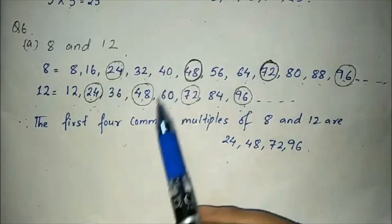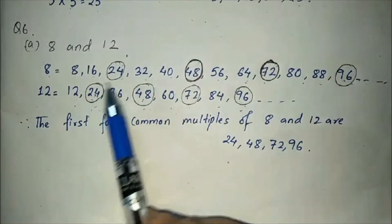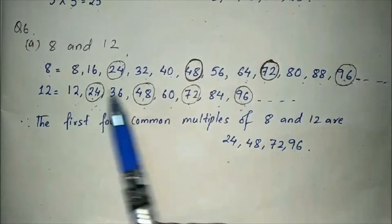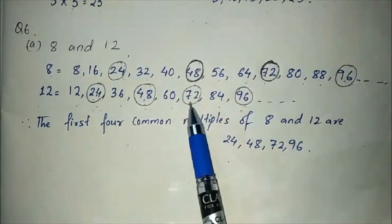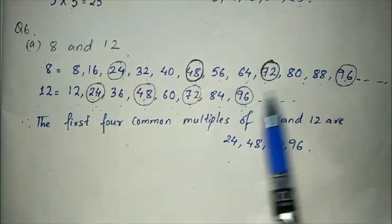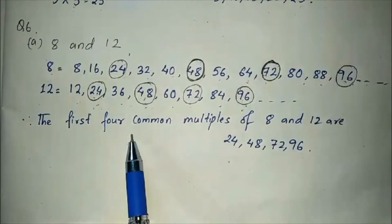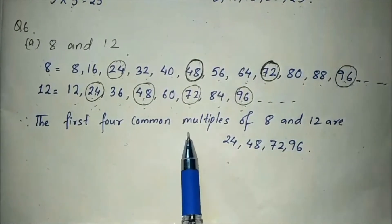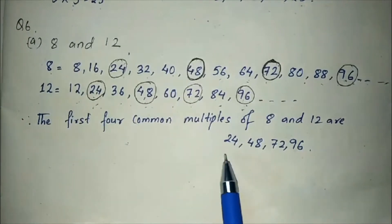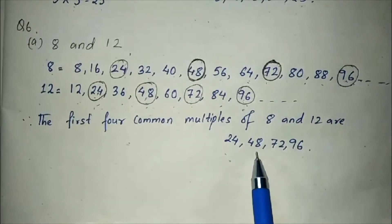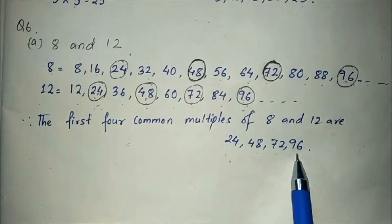Now you can see what the common multiples are: 24 is common, 48 is common, 72 is common, 96 is common. So the first four common multiples of 8 and 12 are 24, 48, 72, and 96.